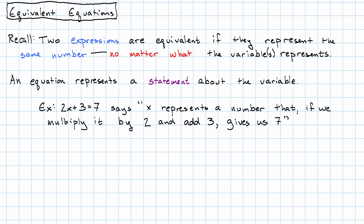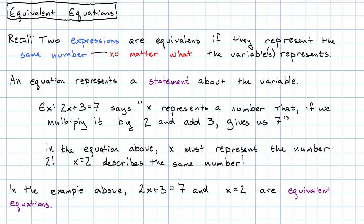Now, if we think about that a little bit, what number is that? The number that if we multiply it by 2 and add 3 gives 7? Maybe with a little bit of trial and error we can guess that's 2. So that means if we just wrote x equals 2, we would be describing exactly the same number. That's what we're getting at with equivalent equations.